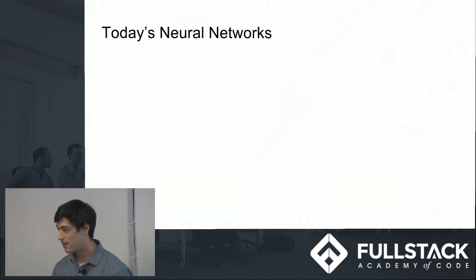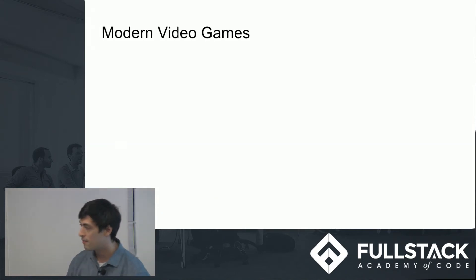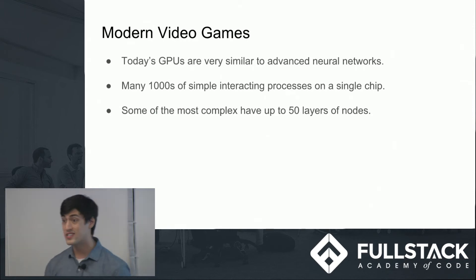What really is cool today, today's neural networks, come from modern-day video games and their graphics processing units, the GPU. These GPUs are very similar to advanced neural networks, thousands of simple images happening in-game, all contained in a single chip. Some of these chips have up to 50 layers of nodes, and that length, or I guess depth, the 50 layers is why it's called deep learning.